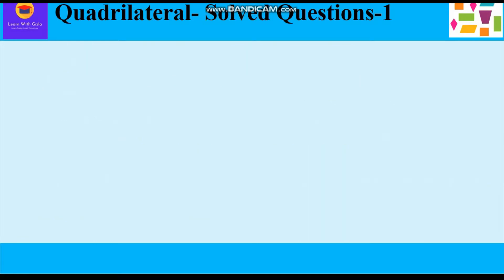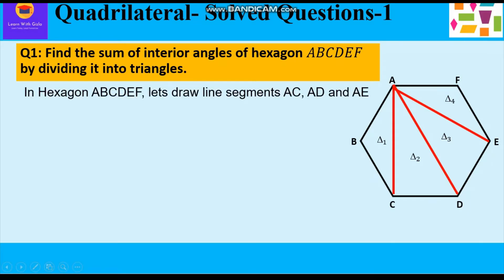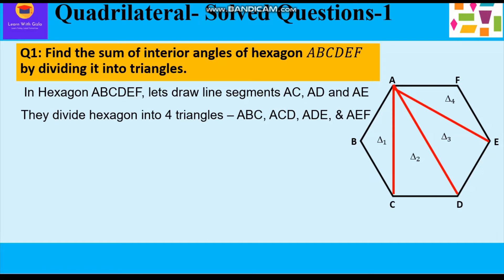The first question: find the sum of interior angles of hexagon ABCDEF by dividing it into triangles. In hexagon ABCDEF, let's draw line segments AC, AD, and AE. These will divide the hexagon into four triangles: triangle ABC, triangle ACD, triangle ADE, and triangle AEF.